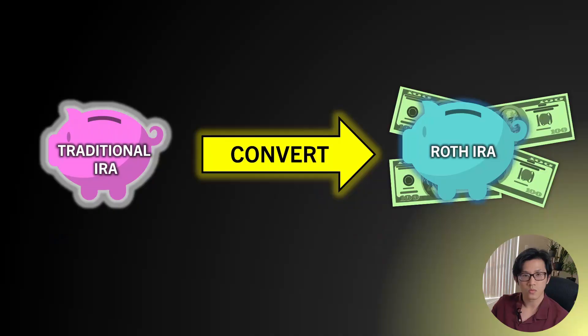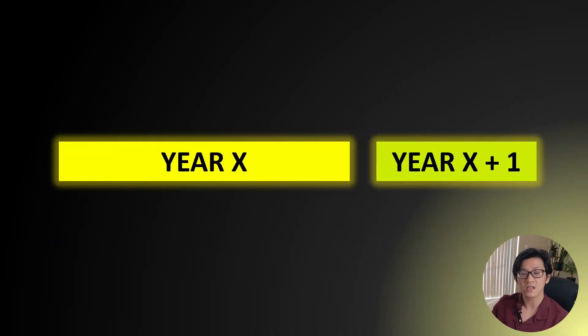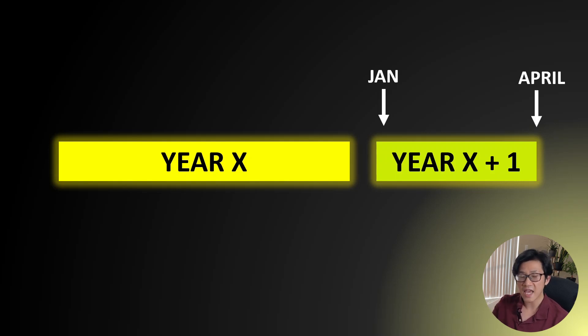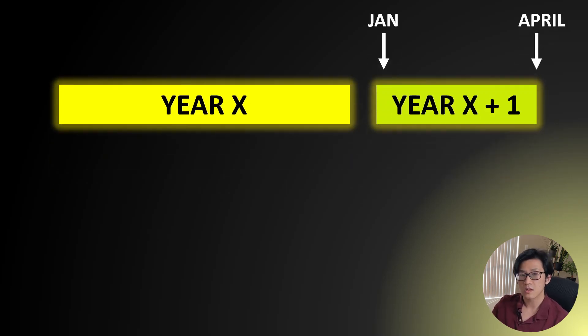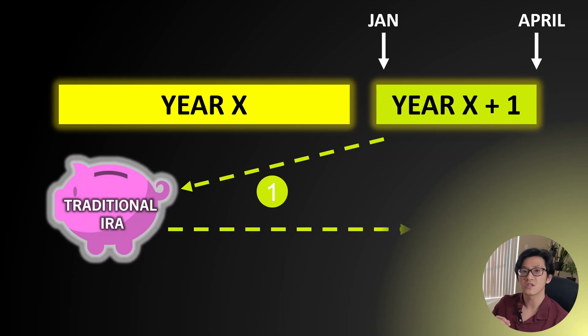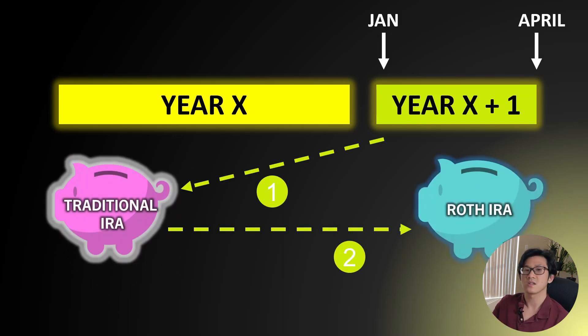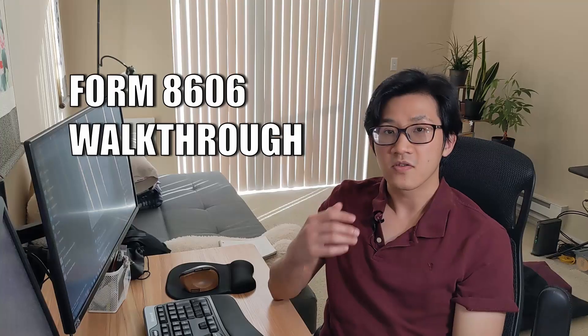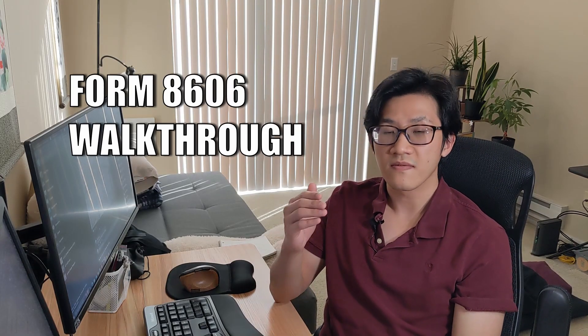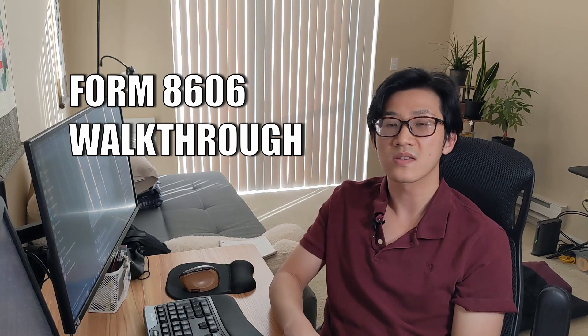A late backdoor Roth IRA is when the following happens. Let's look from the perspective of time. We have year X and year X plus one. You can contribute to a traditional IRA for year X from January to April 15th of year X plus one. So if you did that and then did the conversion to Roth IRA in year X plus one, that's a late backdoor Roth IRA. A Form 8606 needs to be filed to report matters relating to the traditional or Roth IRA.